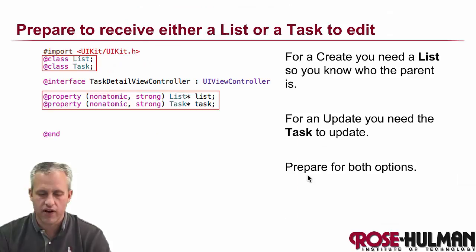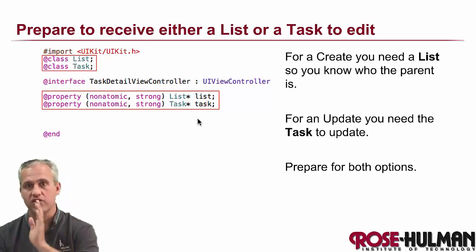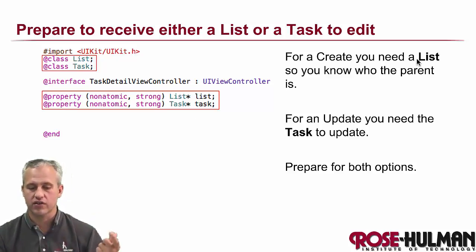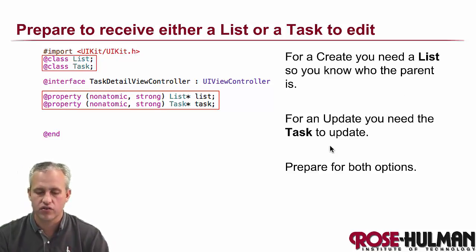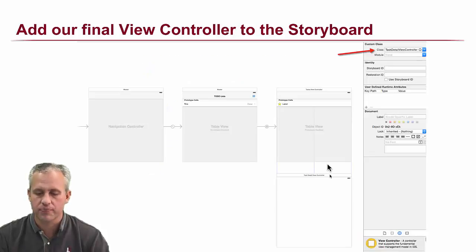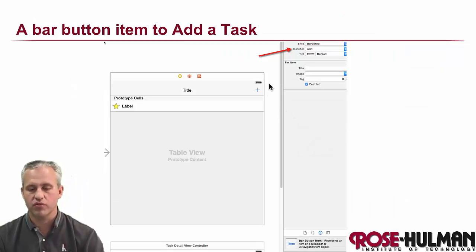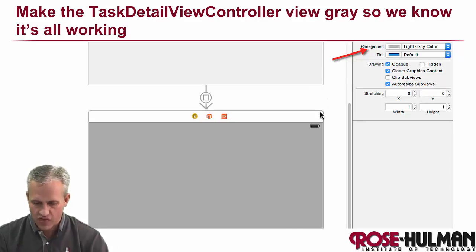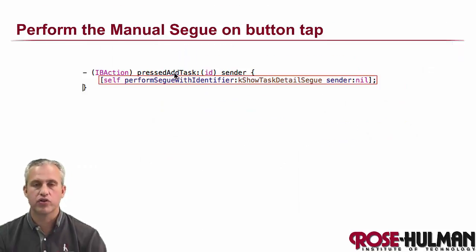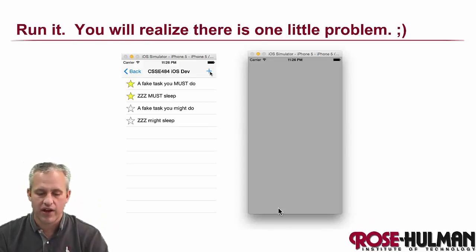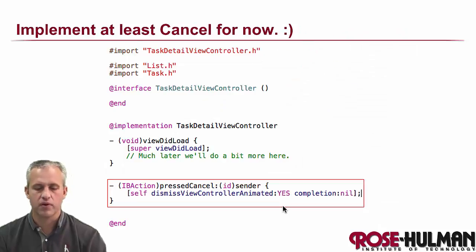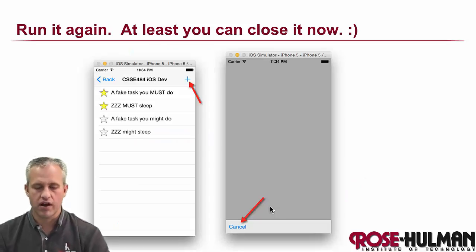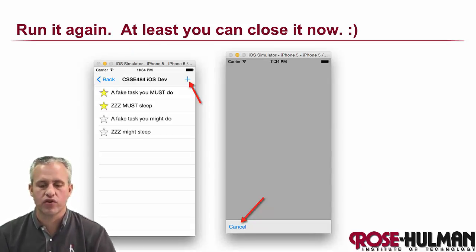To recap: we created the TaskDetailViewController file, put in placeholder 'list' and 'task' properties for much later, and stubbed in some code in the .m file. Most of what we did was in the storyboard — we created the view controller, set the custom class, made a plus button, created a manual segue to present things modally with the identifier set up, wired the add task action to perform that segue, and added a simple cancel button at the bottom that dismisses the view controller animated. We'll see you next time and start flushing out more details of the TaskDetailViewController.